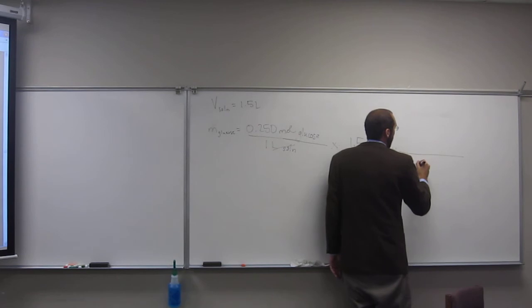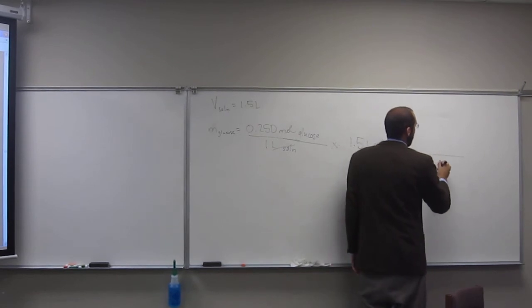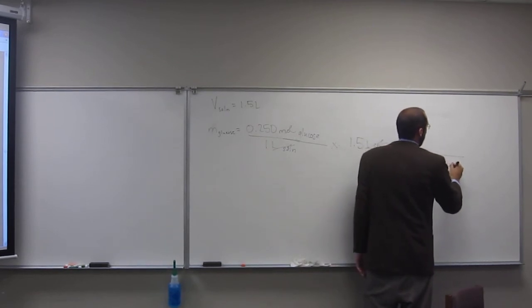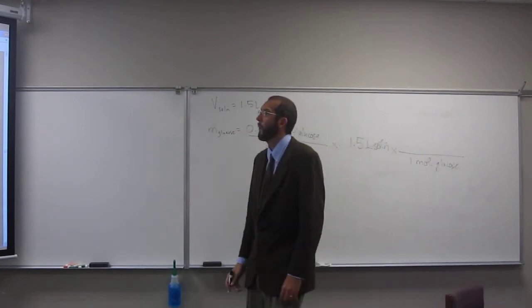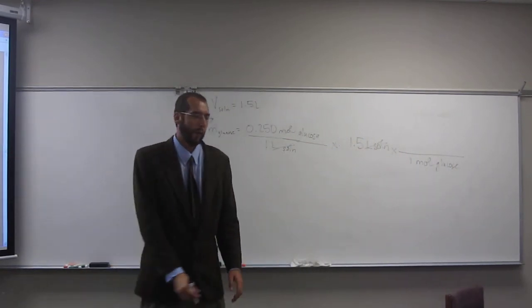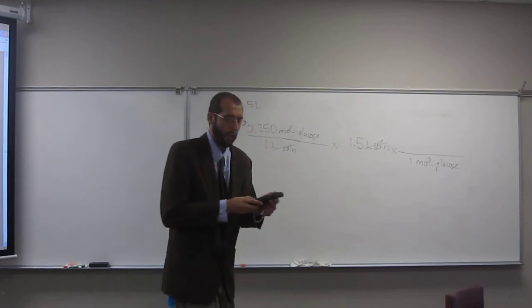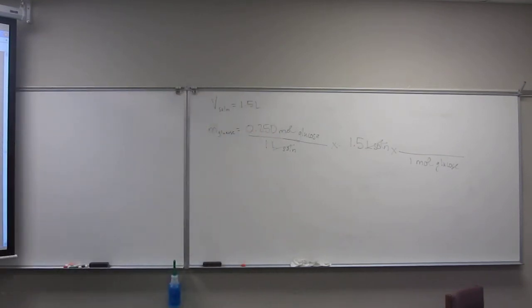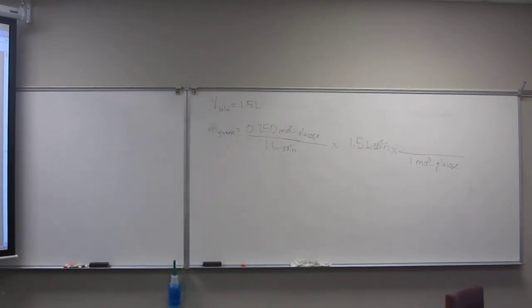so we're gonna put one mole on the bottom, one mole glucose, and, well, let's figure out what the molar mass of glucose is. So, 12.01 times 6, plus 12 times 1.008, plus 6 times 16.